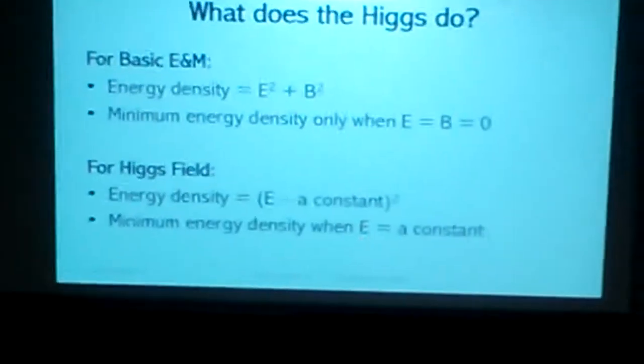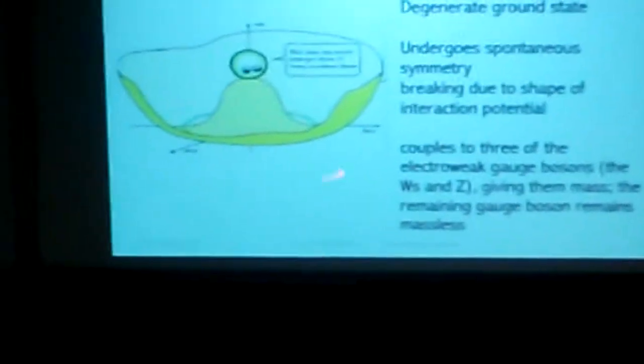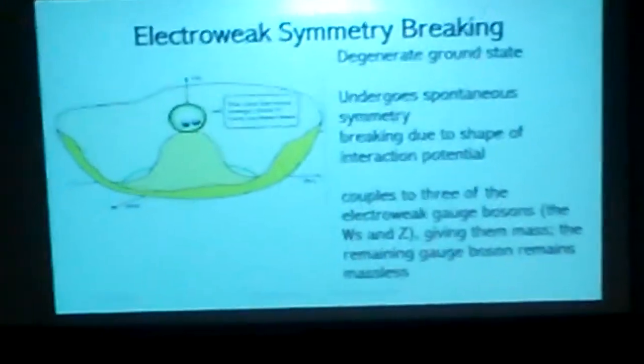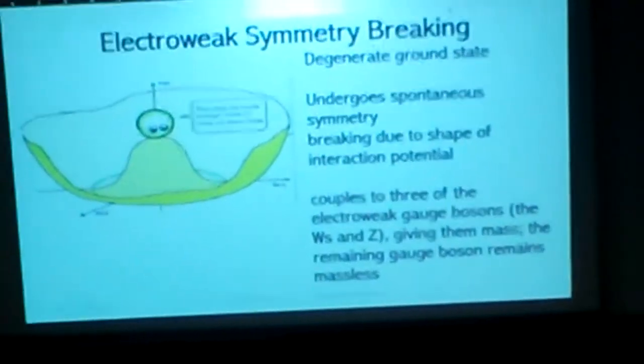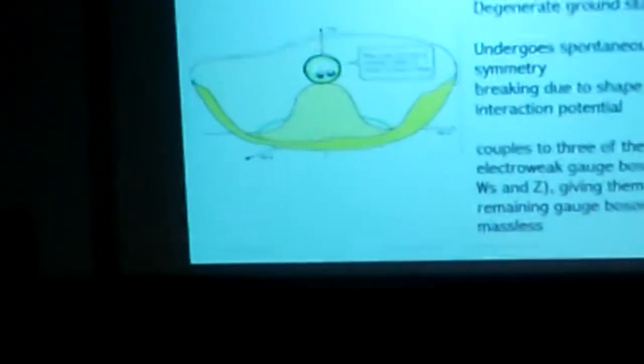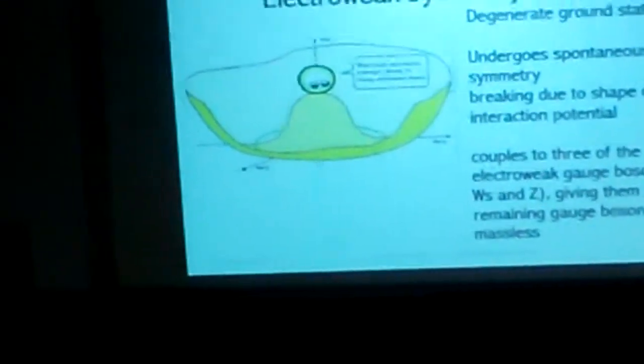The minimum energy density occurs with the Higgs field in a degenerate state — it doesn't like to be up, but it wants to go down. This is what causes the Higgs field. And this field couples to three of the electroweak gauge bosons — the W and Z bosons — and that's what gives them mass. The remaining gauge boson, the photon, doesn't have any mass.